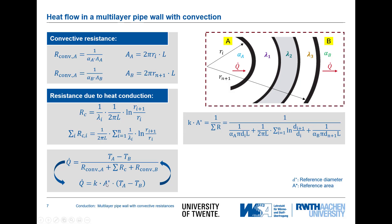If we want to define k times A*, we see that k times A* equals 1 over the sum of all resistances. Formulated with all defined resistances: the convective resistance with coefficient alpha_A on the inside, and alpha_B as the resistance on the outside. The equation can also be expressed using diameters D instead of radii R — it is simply a substitution.